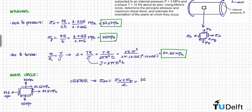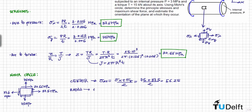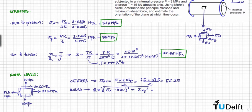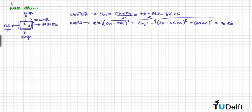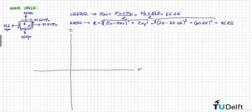The center of the circle is sigma_avg equals sigma_x plus sigma_y divided by 2. The radius is equal to the square root of the quantity sigma_x minus sigma_avg squared plus the shear stress squared. Now I can start drawing the Mohr's circle, with the center located at approximately 56 MPa, which is sigma_avg.